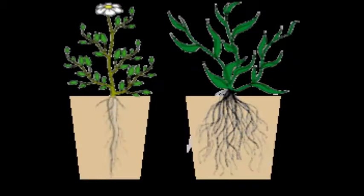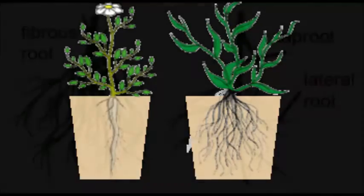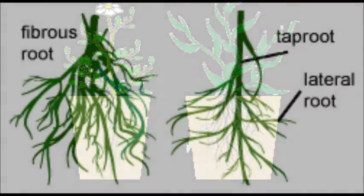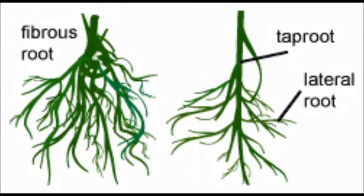The roots anchor plants into the ground. They absorb water and minerals. Some roots store food or develop into new plants. There are two types of root systems: the tap root system — for example, mango trees have this system — and the fibrous root system.